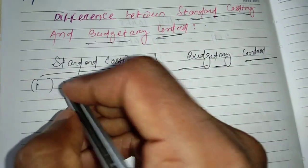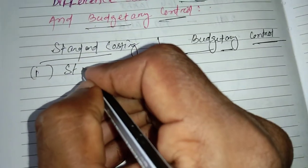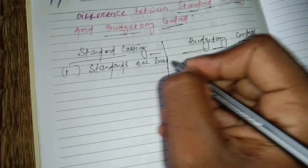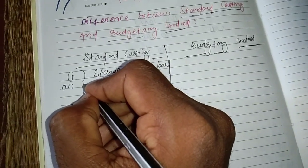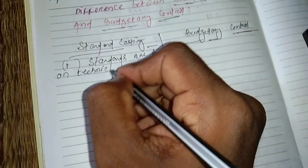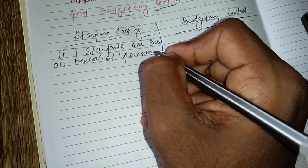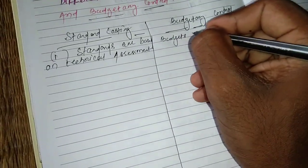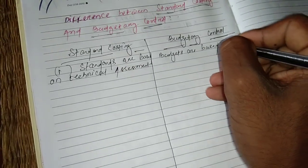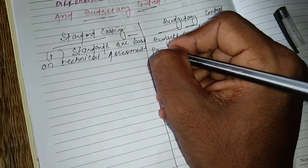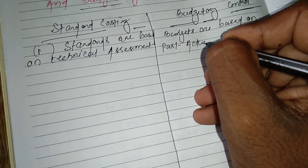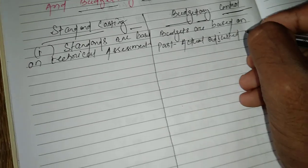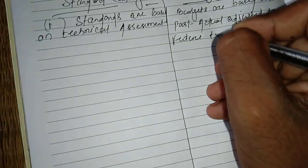In case of standard costing, standards are based on technical assessment. Whereas in case of budgetary control, budgets are based on past actuals adjusted to future trends.